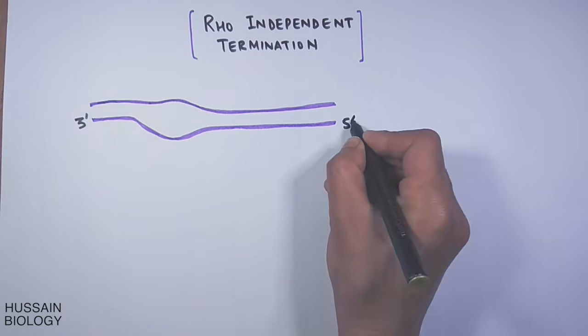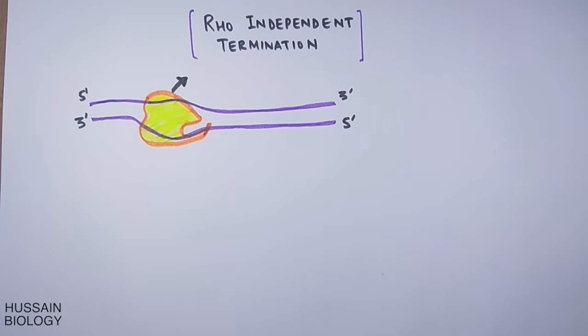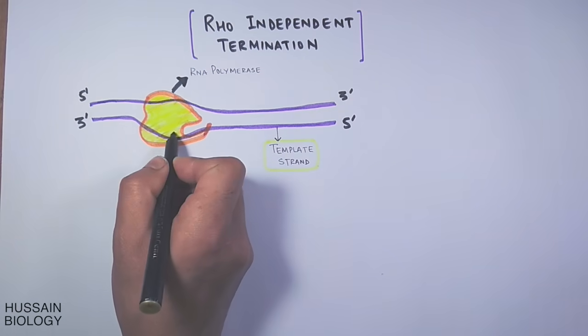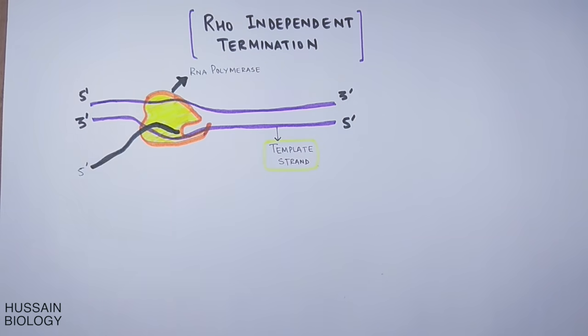In this diagram, we have the DNA molecule with RNA polymerase attached to it. This RNA polymerase enzyme works on the lower strand—that's the template strand—and we have this RNA molecule being synthesized here. In this diagram, we can see the termination site here.